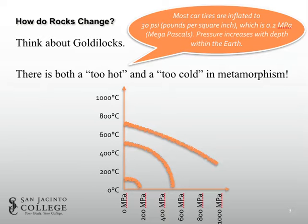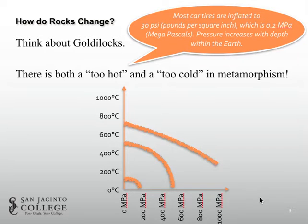When we're talking about metamorphism, we're talking about a range of temperatures and pressures that rocks can be altered at. Similar to Goldilocks, there is a too hot and a too cold in metamorphism. As you go deeper in the Earth's crust, you encounter higher temperatures — remember the geothermal gradient — and also higher pressures. On the y-axis are degrees Celsius, and on the x-axis the units are in megapascals, which is a unit of pressure.